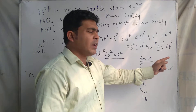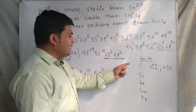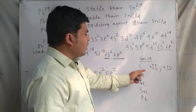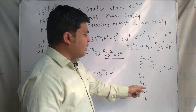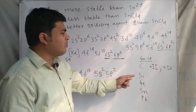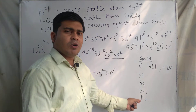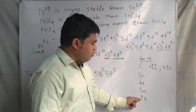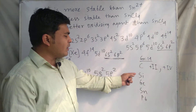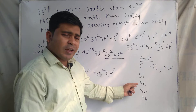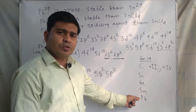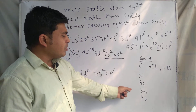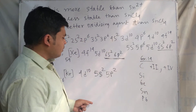For Group 14 elements — carbon, silicon, germanium, tin, and lead — the available oxidation states are +2 and +4. However, for the heavier members lower in the group, the +2 oxidation state becomes more stable and the +4 oxidation state becomes less stable. Lead is at the bottom of Group 14, so as we go down the group, the inert pair effect occurs.